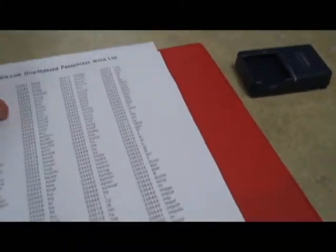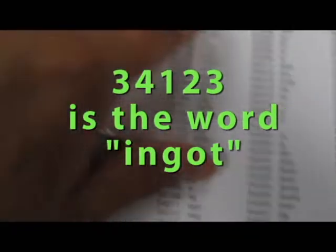Let's look it up in the book. Three, four, one, two, three. Here we go. It is the word ingot, which is like a gold bar. So here's our second word, ingot.